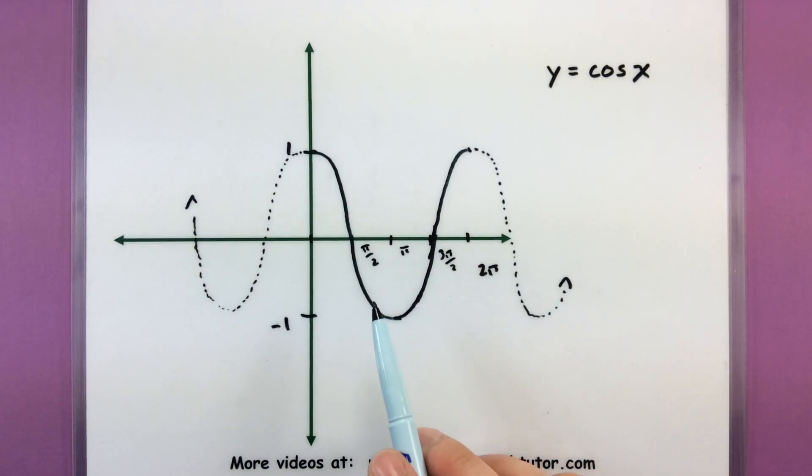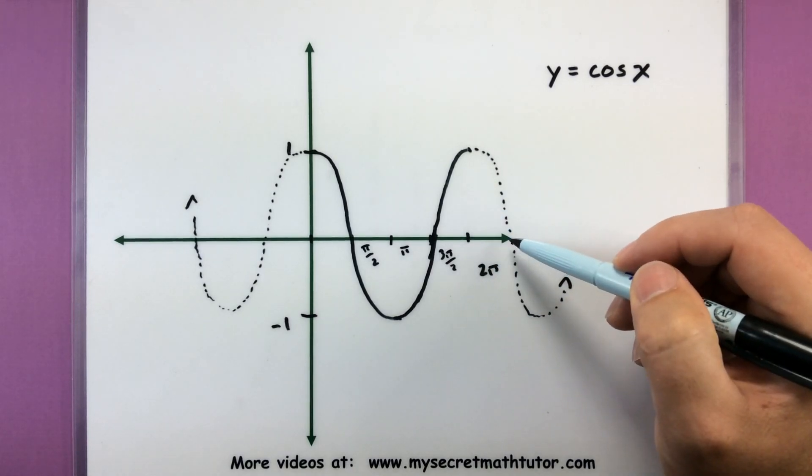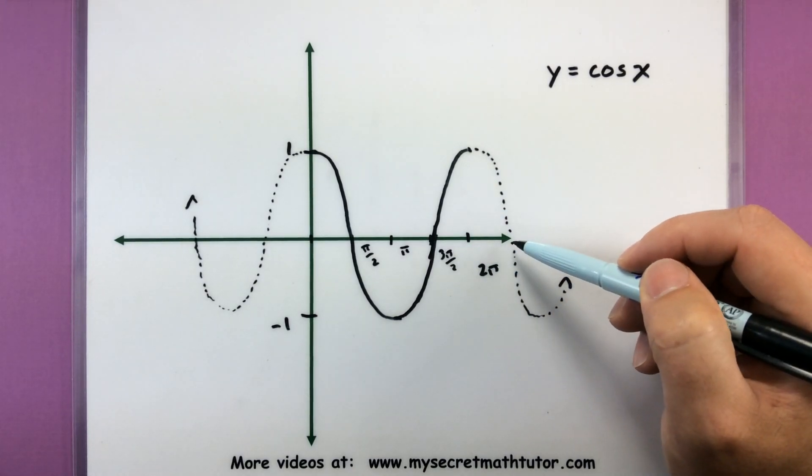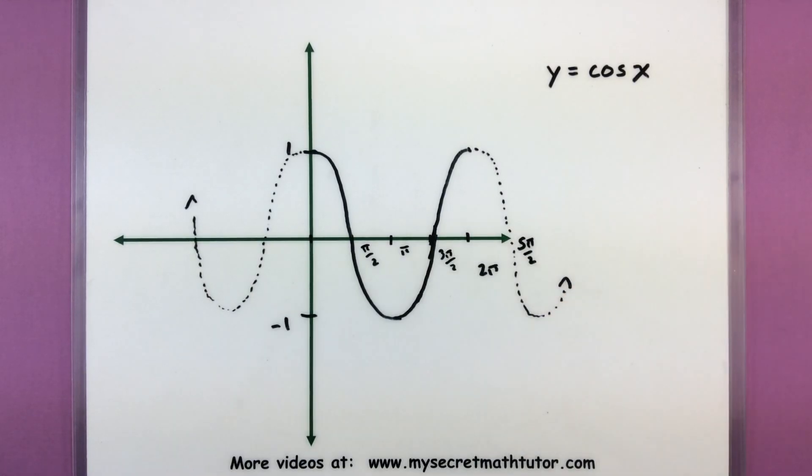So, some key values that we get here is we have that it crosses through the x-axis at pi over 2 and 3 pi over 2. And the next one out here, you can imagine going 2 pi and then just an additional pi over 2. So this would be our 5 pi over 2. Alright, so those are our basic graphs for sine and cosine. Now let's explain just a little bit more of why it gets this wonderful wavy motion.